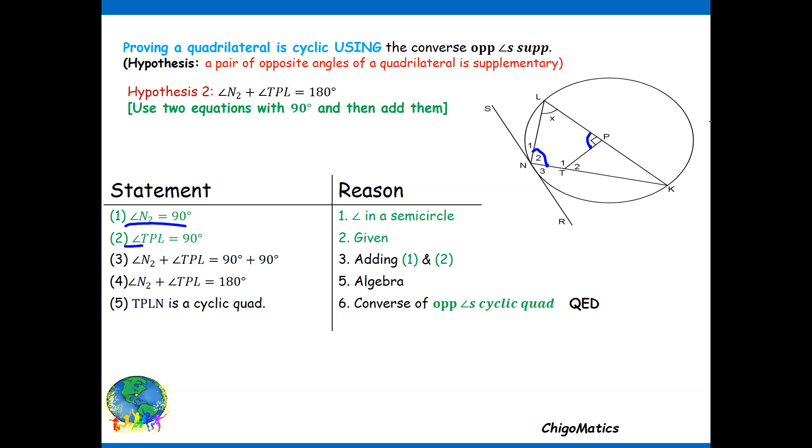Then I add one and two. You add the left-hand side then add the right-hand side. This is the situation that I have here. Then when you simplify, you find you reach at this which is the same as our hypothesis. Then you conclude that TPLN is a cyclic quad using the converse of opposite angles cyclic quad.